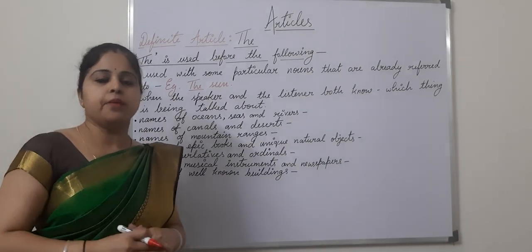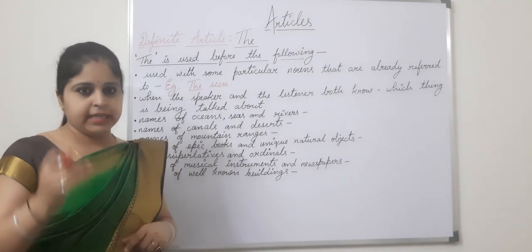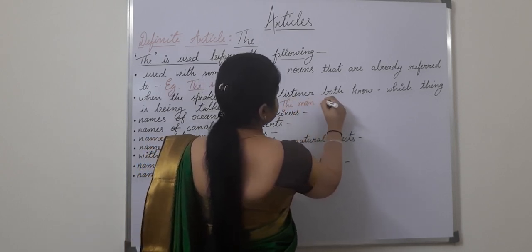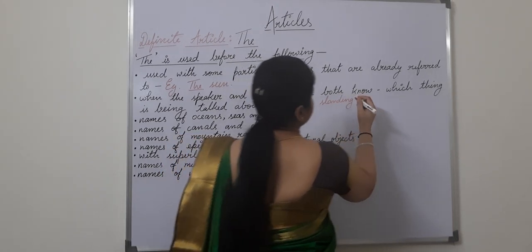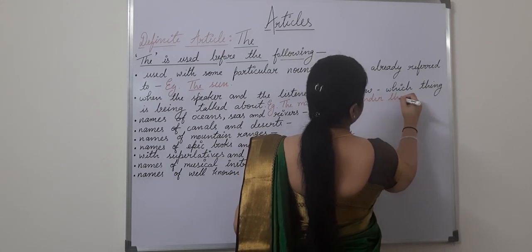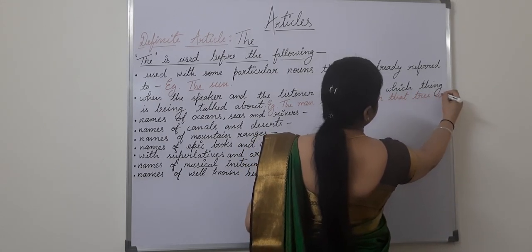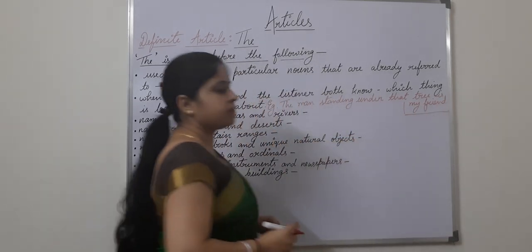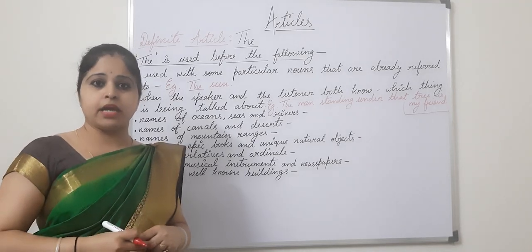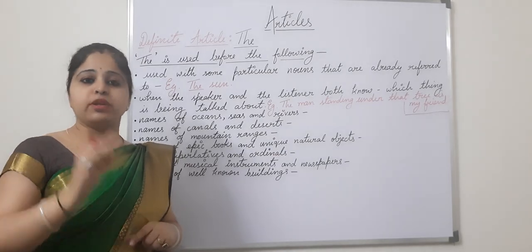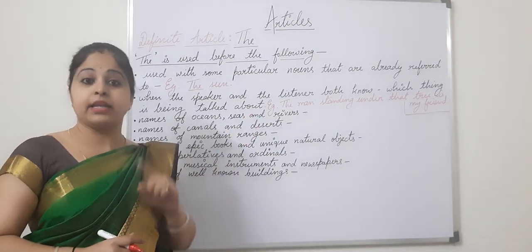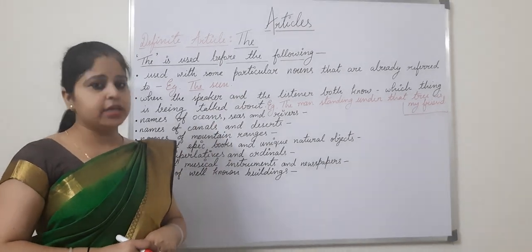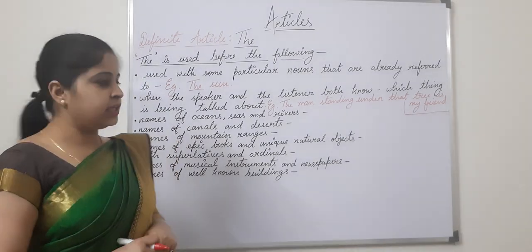For example: 'The man standing under that tree is my friend.' I am telling this to you and you can also see that particular man. So it is clear that not all men, but that particular man standing under that tree — and that particular tree I am indicating. In such cases, we use 'the' before these nouns.